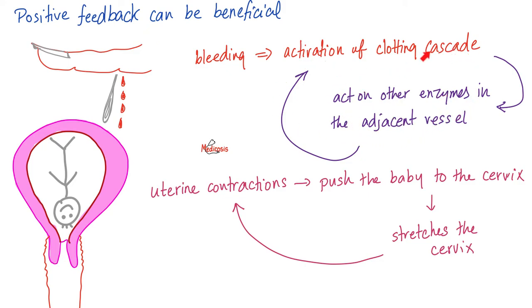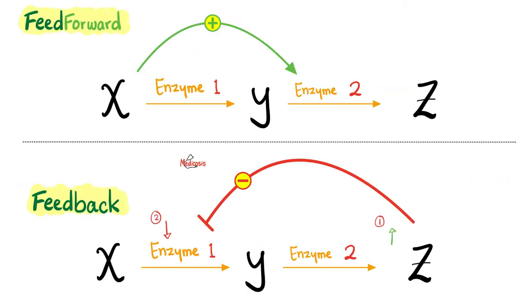And then you activate more so that you can stop the bleeding. Another example is the uterine contraction. Uterine contraction will push the fetus downwards, which stretches the cervix. The stretch of the cervix increases uterine contractions, which causes the fetus to descend more, until extrusion of the baby takes place.